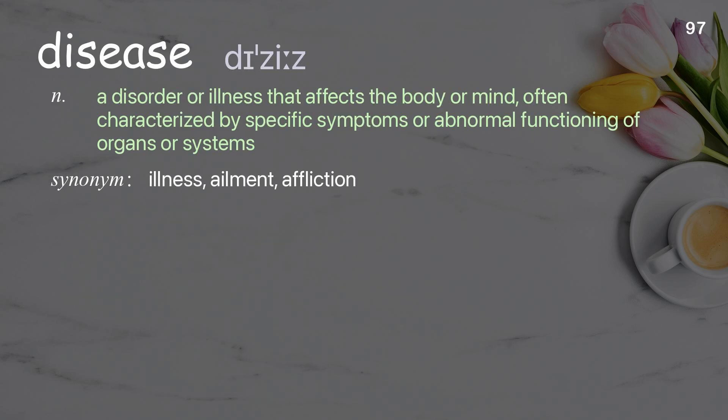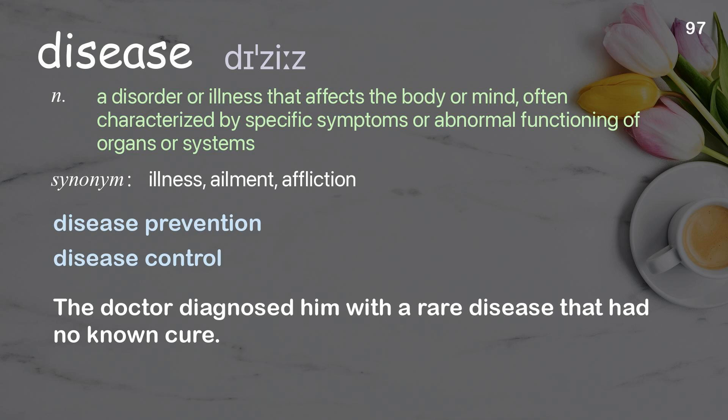Disease: a disorder or illness that affects the body or mind, often characterized by specific symptoms or abnormal functioning of organs or systems. Examples: disease prevention, disease control. The doctor diagnosed him with a rare disease that had no known cure.